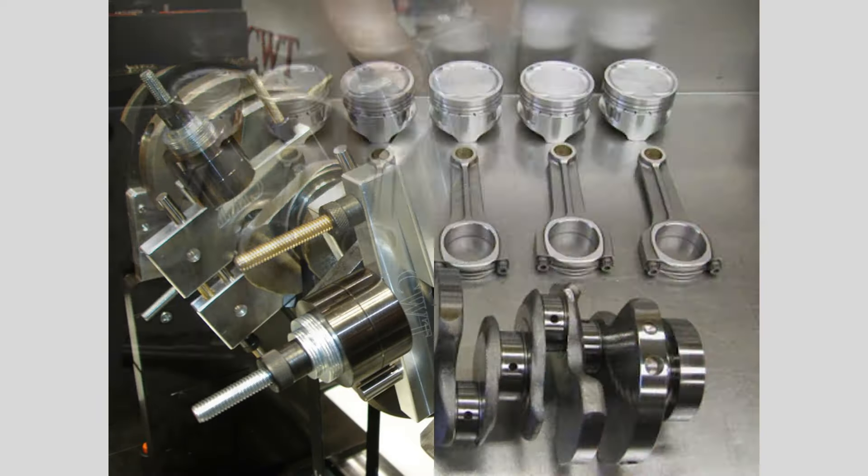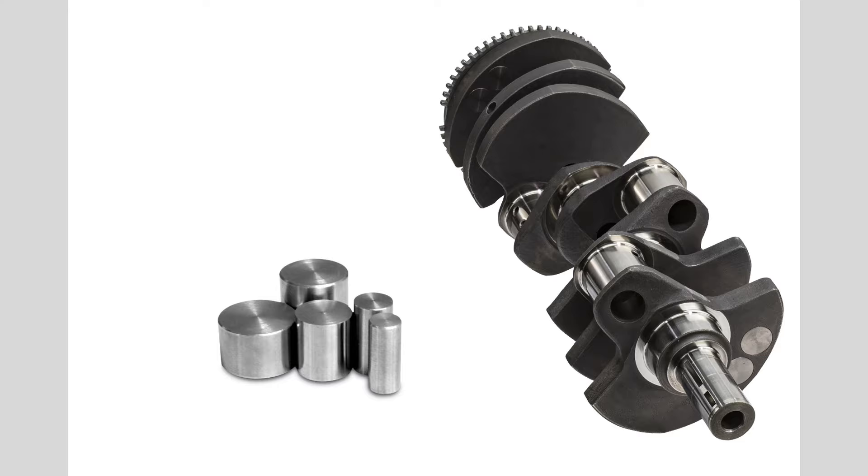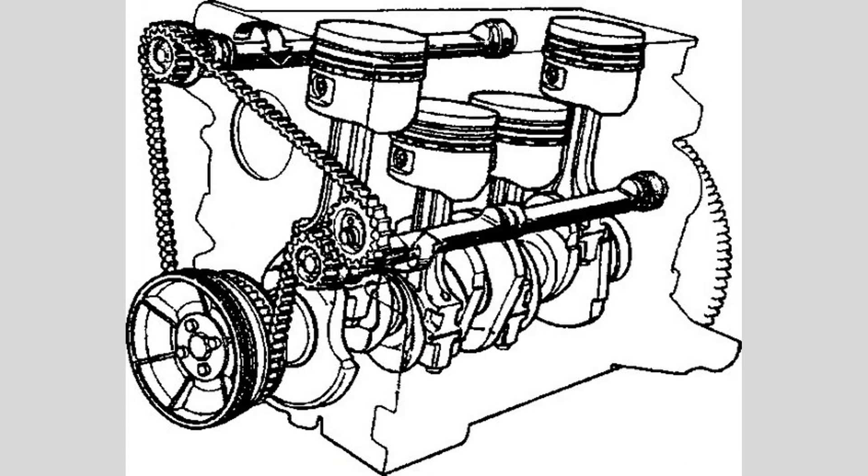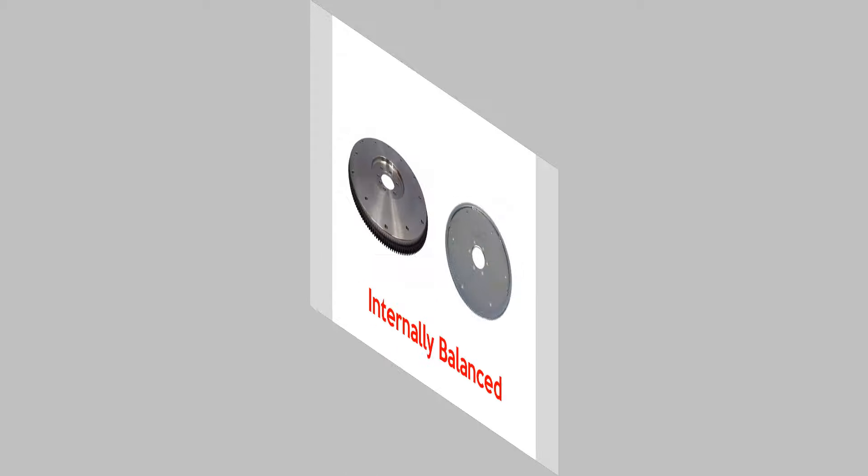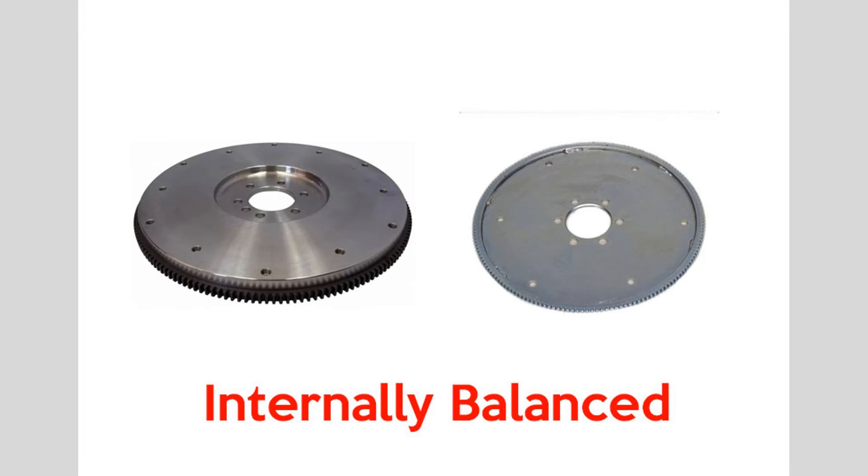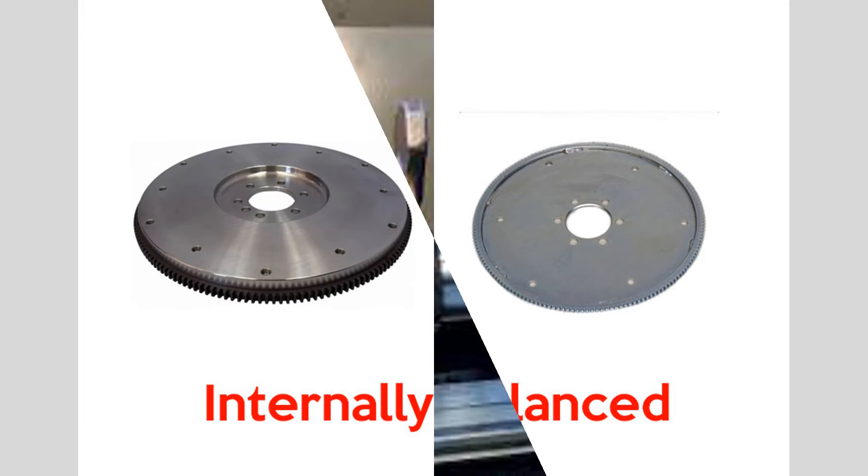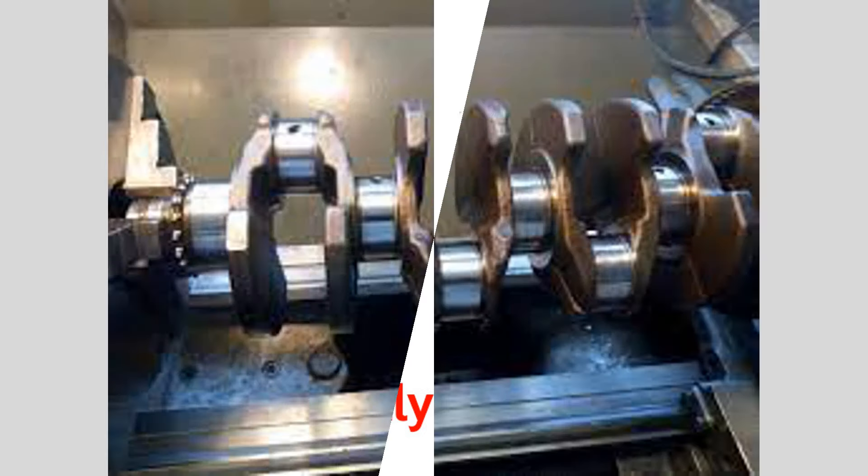Crankshaft balancing. The crankshaft is a critical component that requires careful balancing. There are two types of crankshaft balance: external balancing and internal balancing. External balancing involves adding counterweights to the harmonic balancer and flywheel/flex plate. Internal balancing typically involves removing material from the crankshaft to achieve balance.